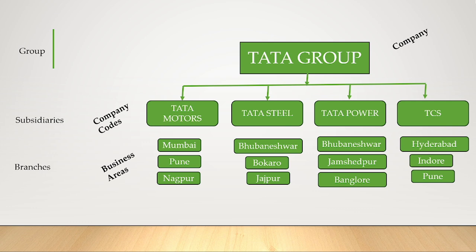Before going to the configuration part, we should first understand what is company, what is company code, and what is business area. As depicted in the picture, company means a group of companies. Here I have taken Tata Group as a company. Tata Group has its subsidiaries: Tata Motors, Tata Steel, Tata Power, and TCS.